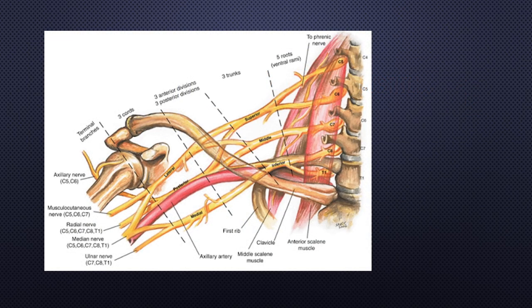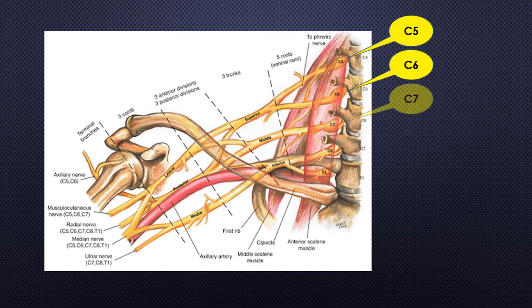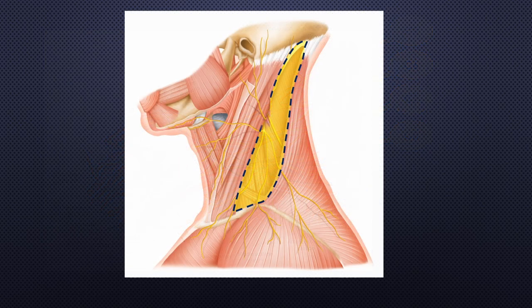The brachial plexus is a network of nerves formed by the anterior rami of C5, C6, C7, C8, and T1. It supplies the afferent and efferent nerve fibers to the chest, shoulder, arm, forearm, and hand.